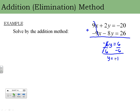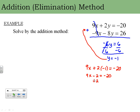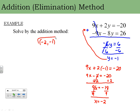Now I take y equals negative 1 and plug it back into one of the original equations to find x. Sometimes one equation is easier to plug into, but here it doesn't matter much. Substituting, 2 times negative 1 is negative 2, then I add 2 to both sides: 9x equals negative 20 plus 2, which is negative 18. Dividing by 9 gives x equals negative 2. So the answer is the point (negative 2, negative 1).